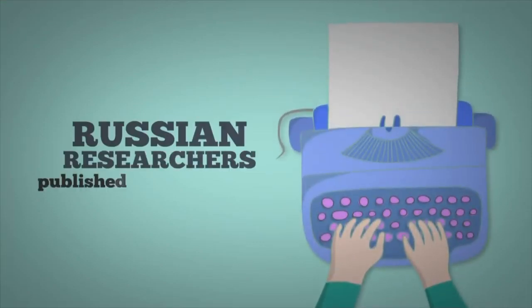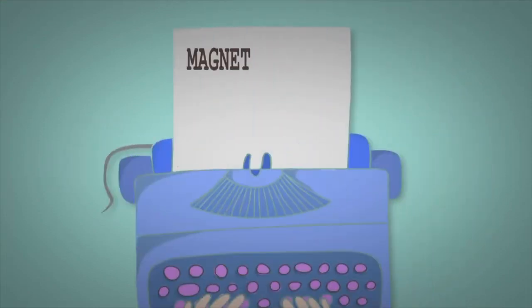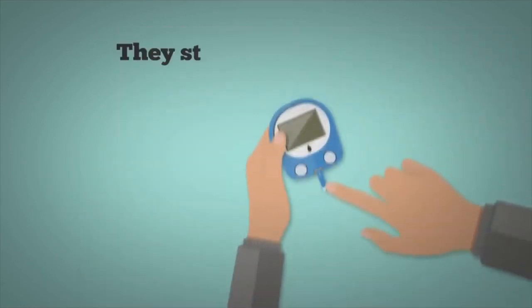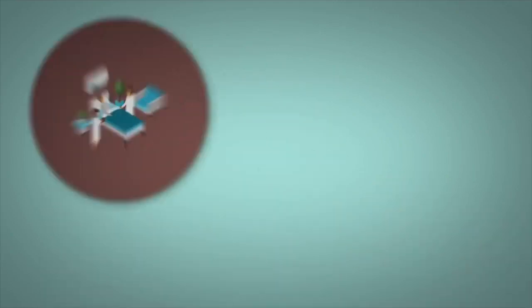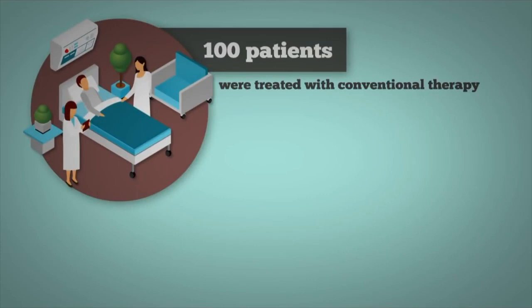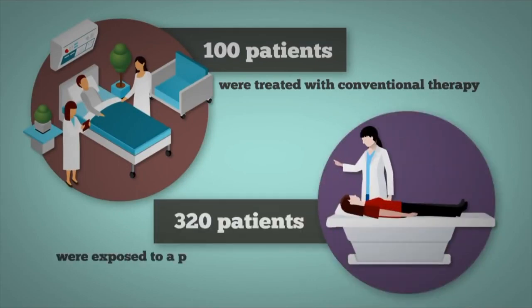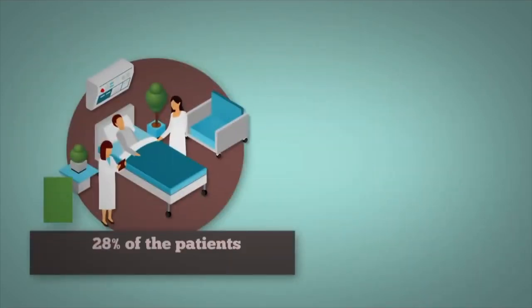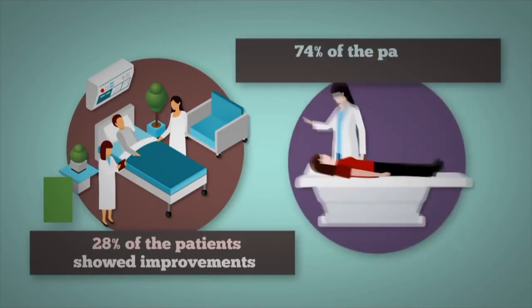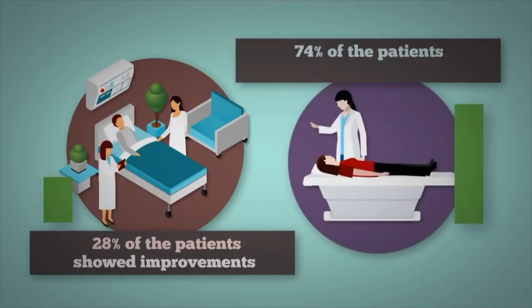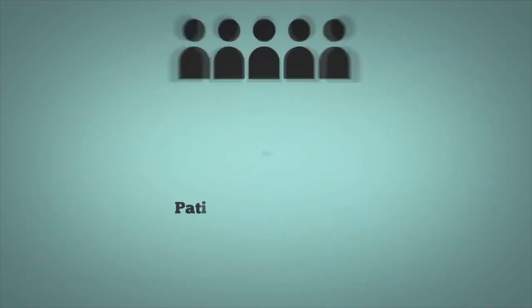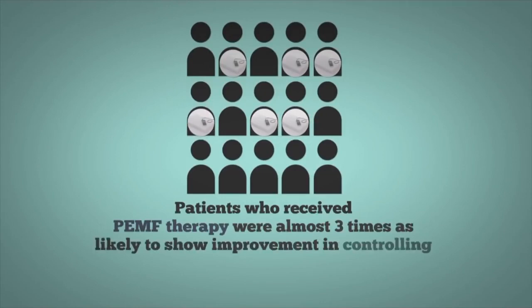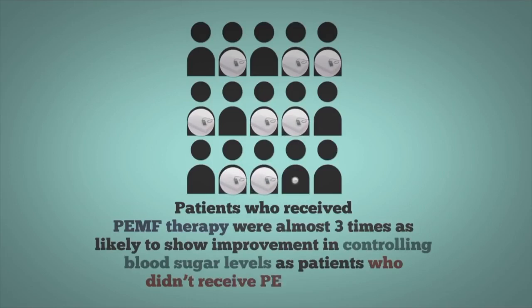Russian researchers published an article in 1996 called Magnetotherapy in the comprehensive treatment of vascular complications of diabetes. They studied 420 patients with diabetes. 100 of these patients were treated with conventional therapy, while 320 of them were exposed to a pulsed magnetic field in addition to conventional therapy. 28% of the patients in the control group showed improvements, while 74% of the patients who were treated with the pulsed magnetic field showed improvements. In other words, patients who received PEMF therapy were almost three times as likely to show improvement in controlling blood sugar levels as patients who didn't receive PEMF therapy.